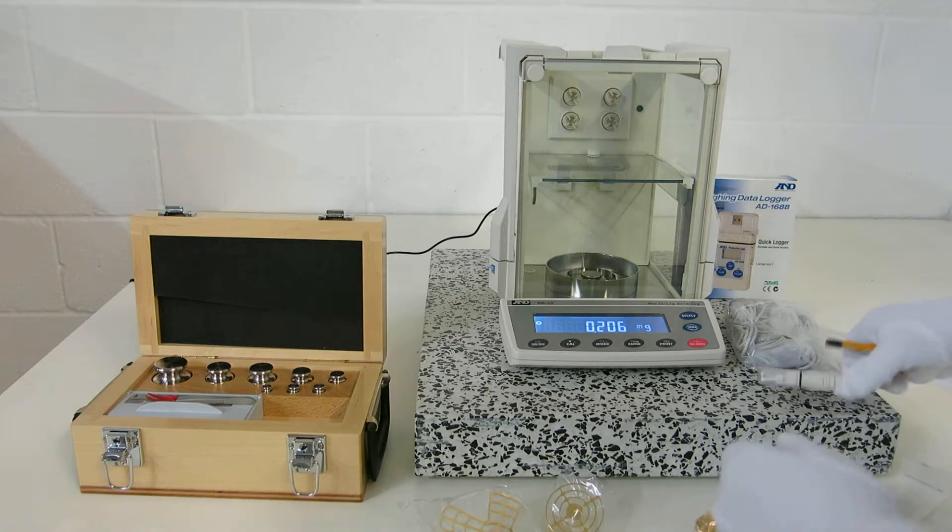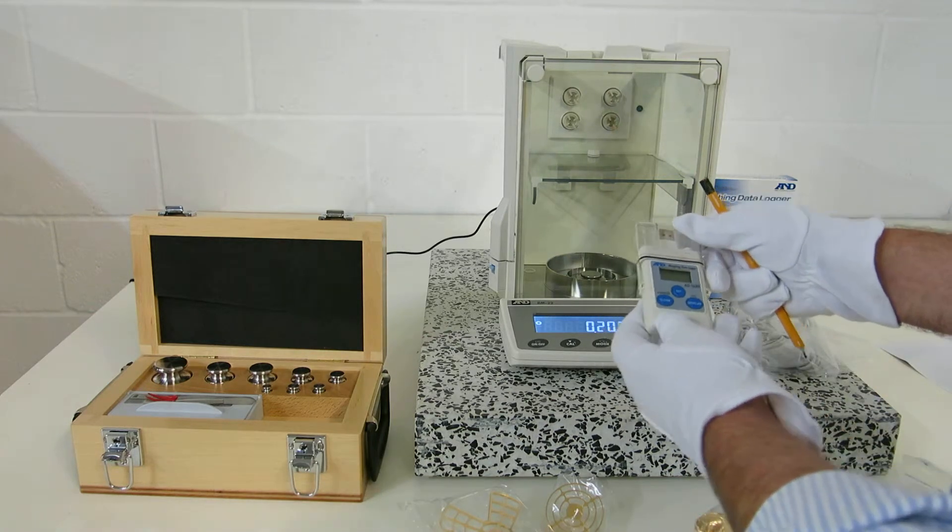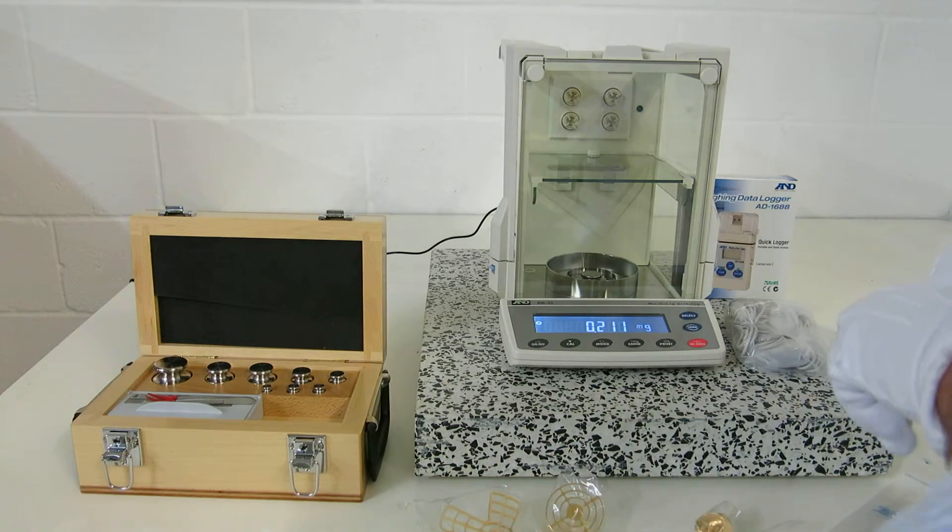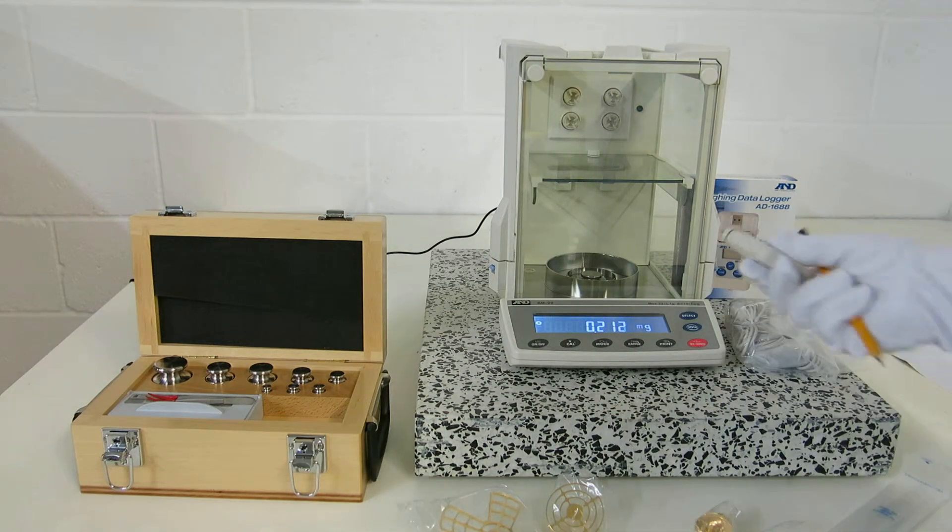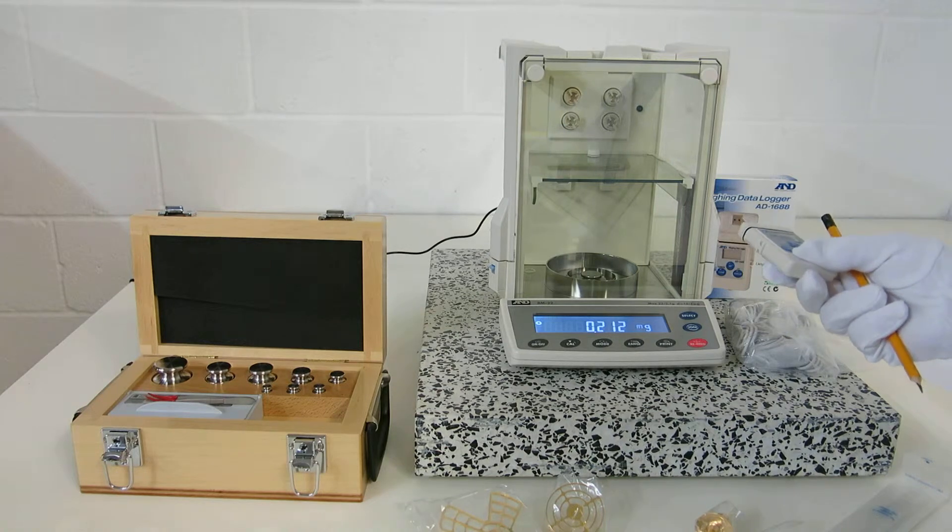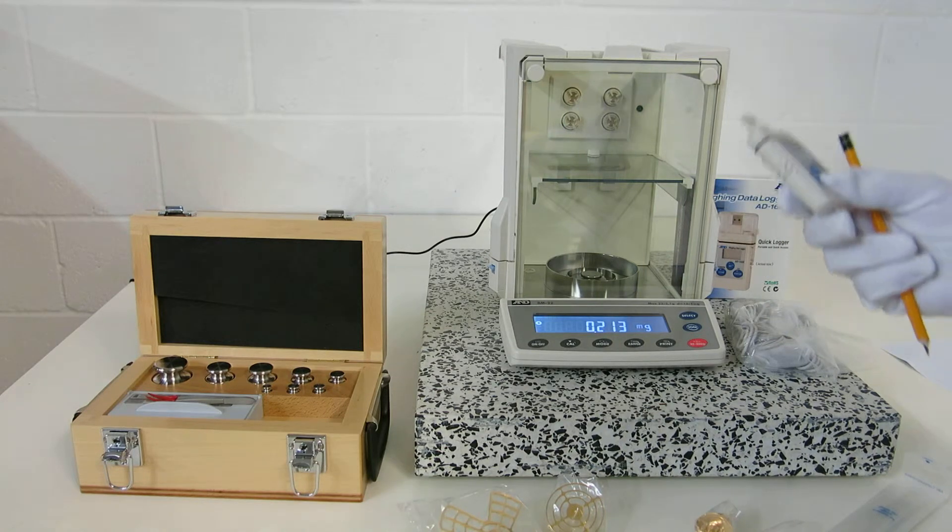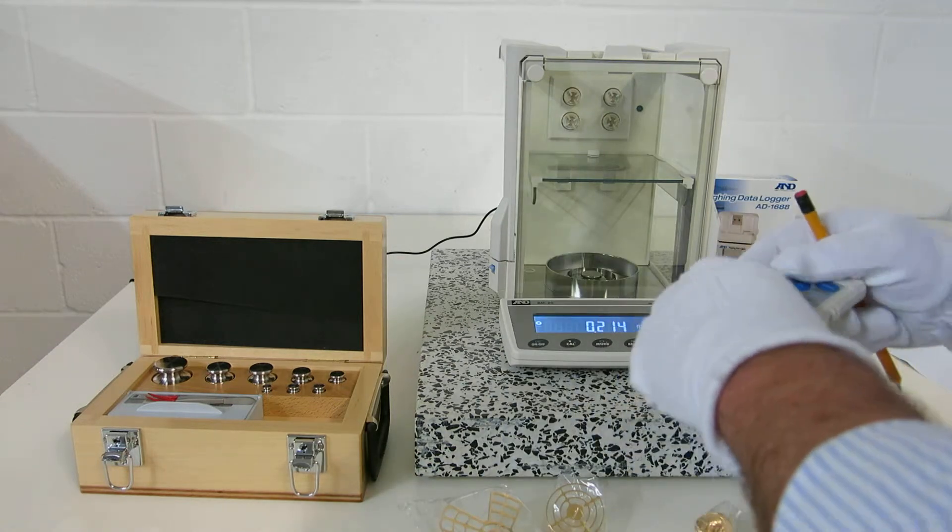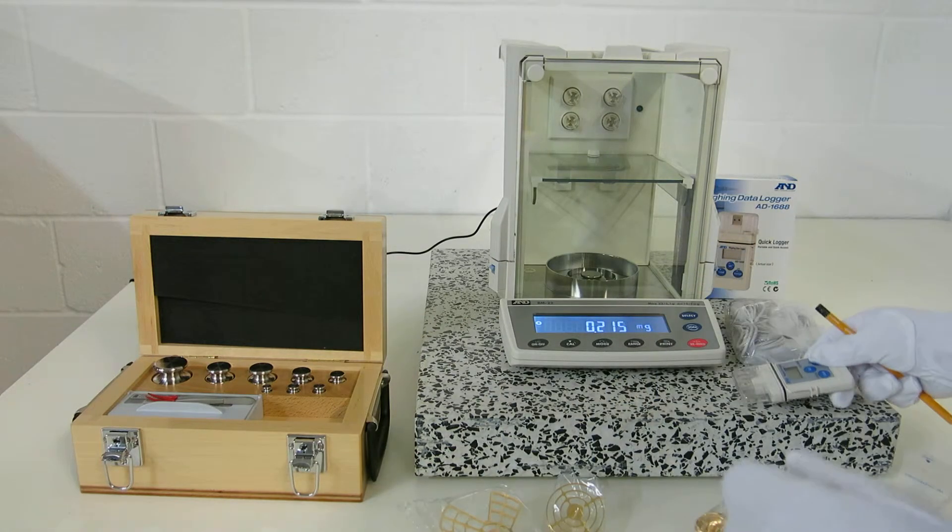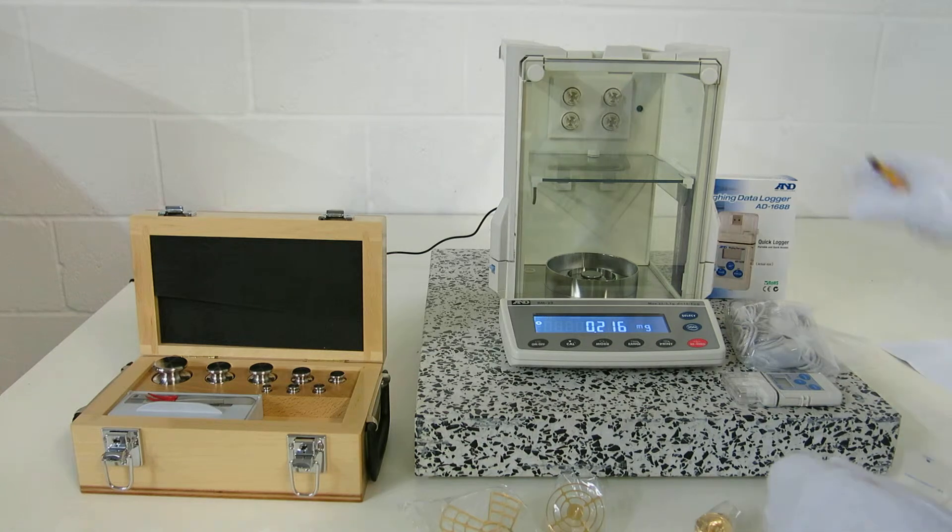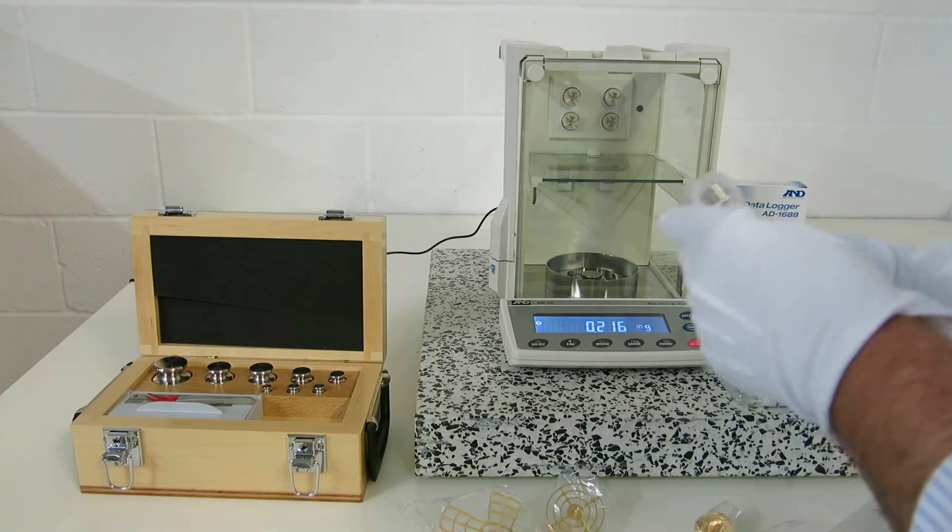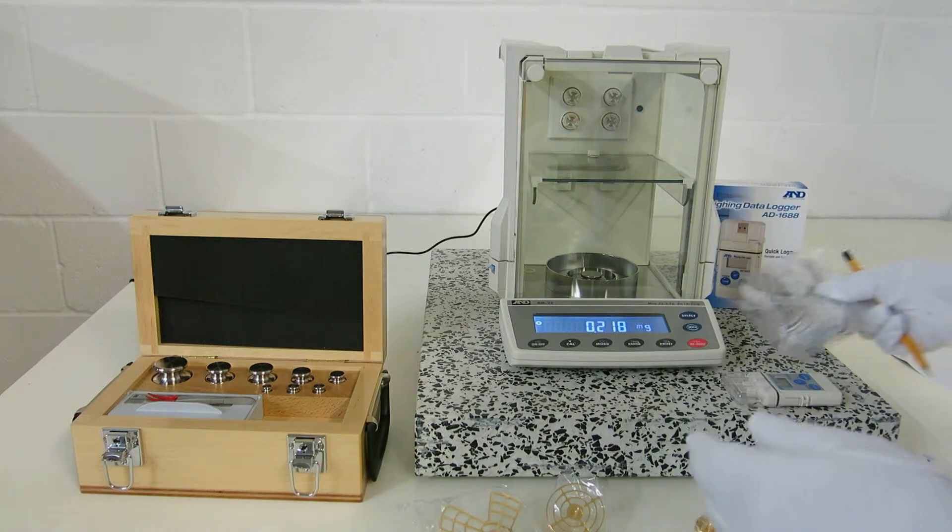What we've also got is this device here. This is a weighing data logger, an AD1688, and the beauty with this is it works on a USB interface. So you plug it straight into the back of the balance and then take it out of the balance, put it into your computer, and you can record all the information. It makes it so much easier and quicker for you to record your data. It comes in this packet, there's a variety of different connectors here for USB charging.